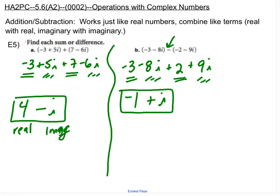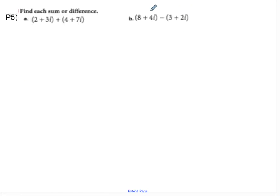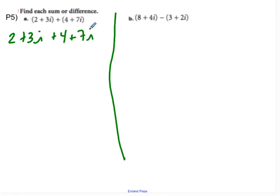Alright, moving on. So you're going to try the same thing for p5. You can go ahead and pause me if you don't want me to do this. So 2 plus 3i. Again, this plus sign being distributed doesn't change anything, so I get plus 4 plus 7i. My real components are 6. My imaginary components are 10i, and that's it.